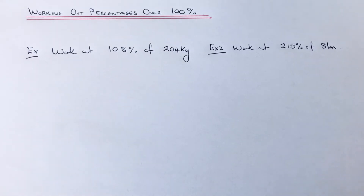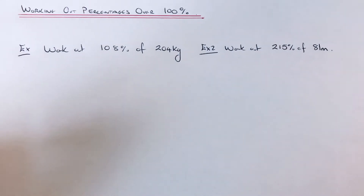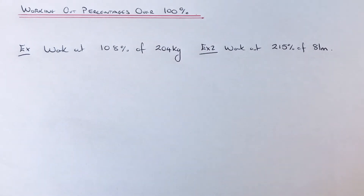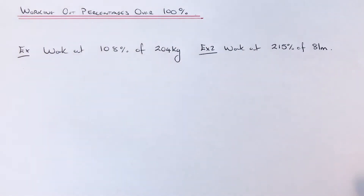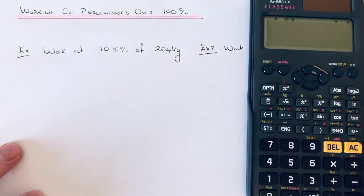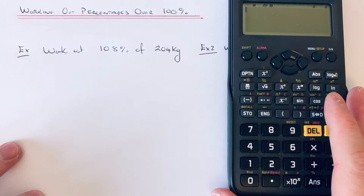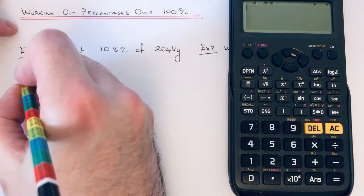Hi guys, welcome back, this is Maths 3000. I'm going to show you how to work out the percentage of a number where the percentage is bigger than 100%. The thing about this type of question is to just do exactly the same as how you do all the percentage questions. We're going to use our calculator to do these. The first one is to work out 108% of 204 kilograms.